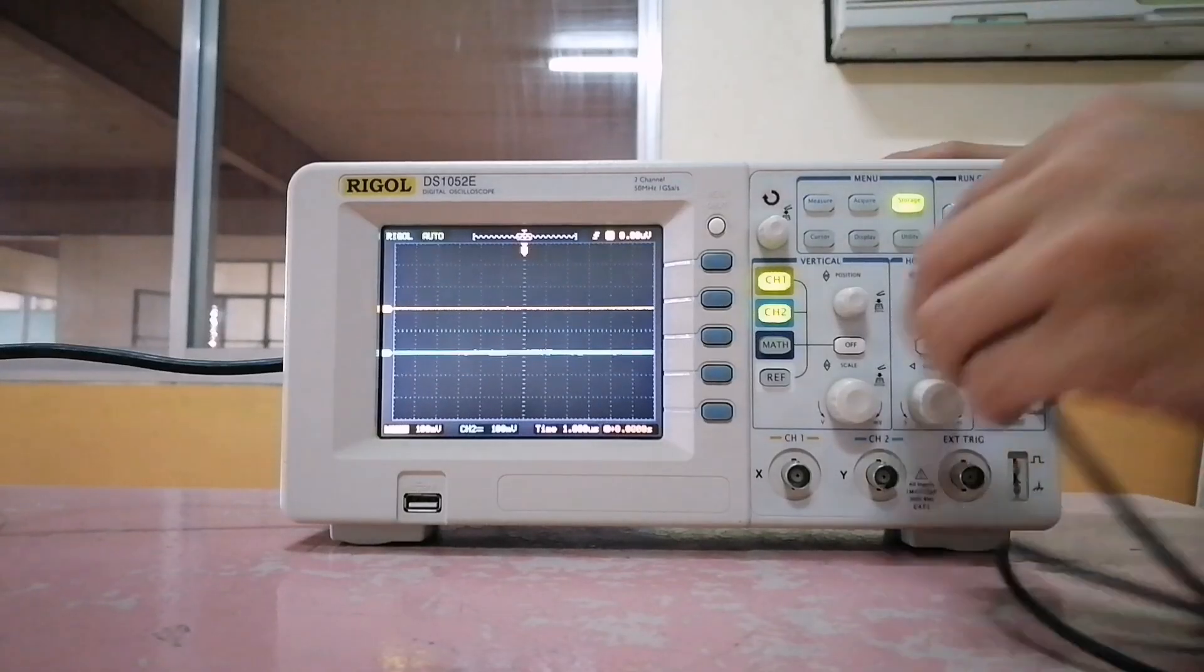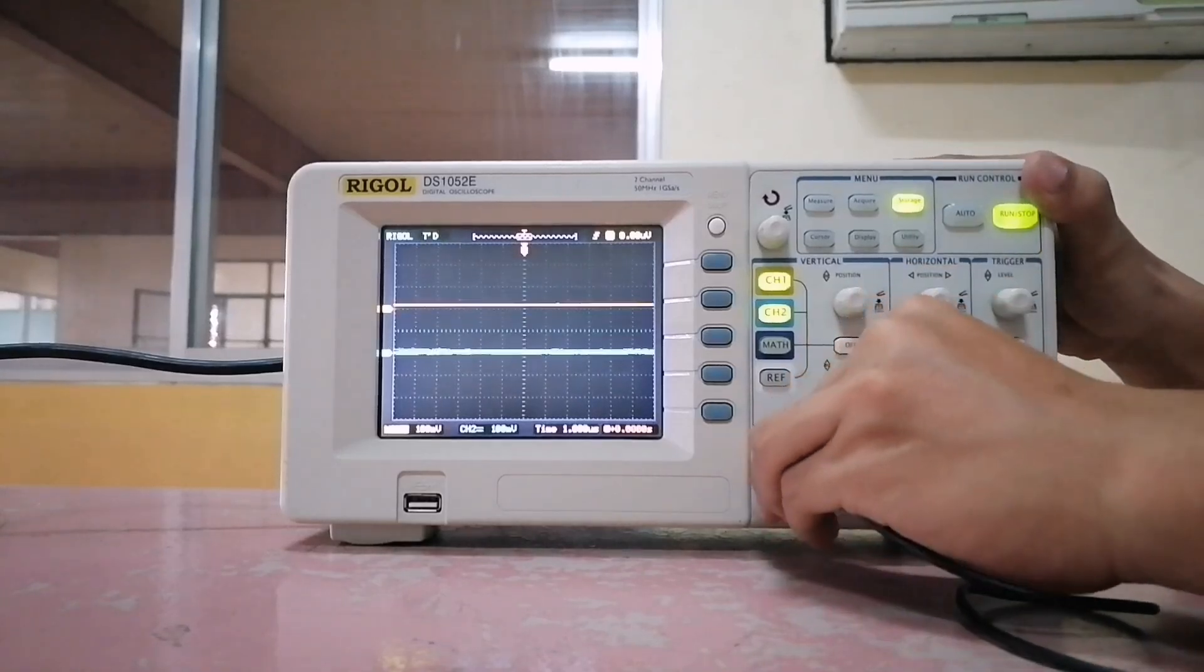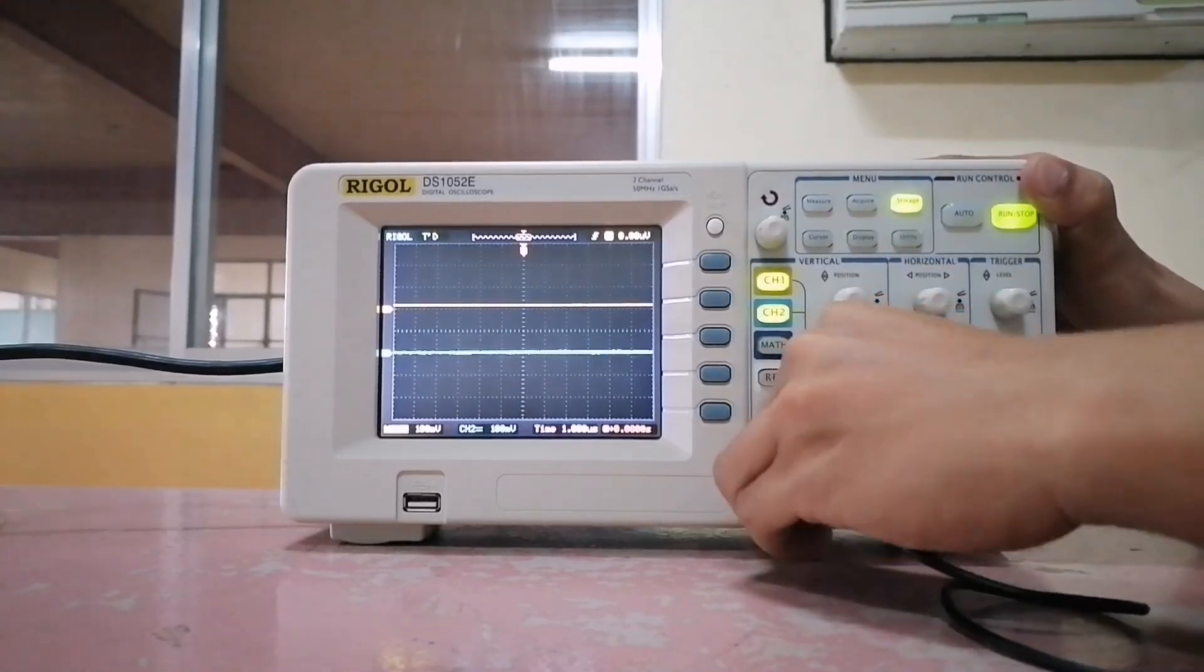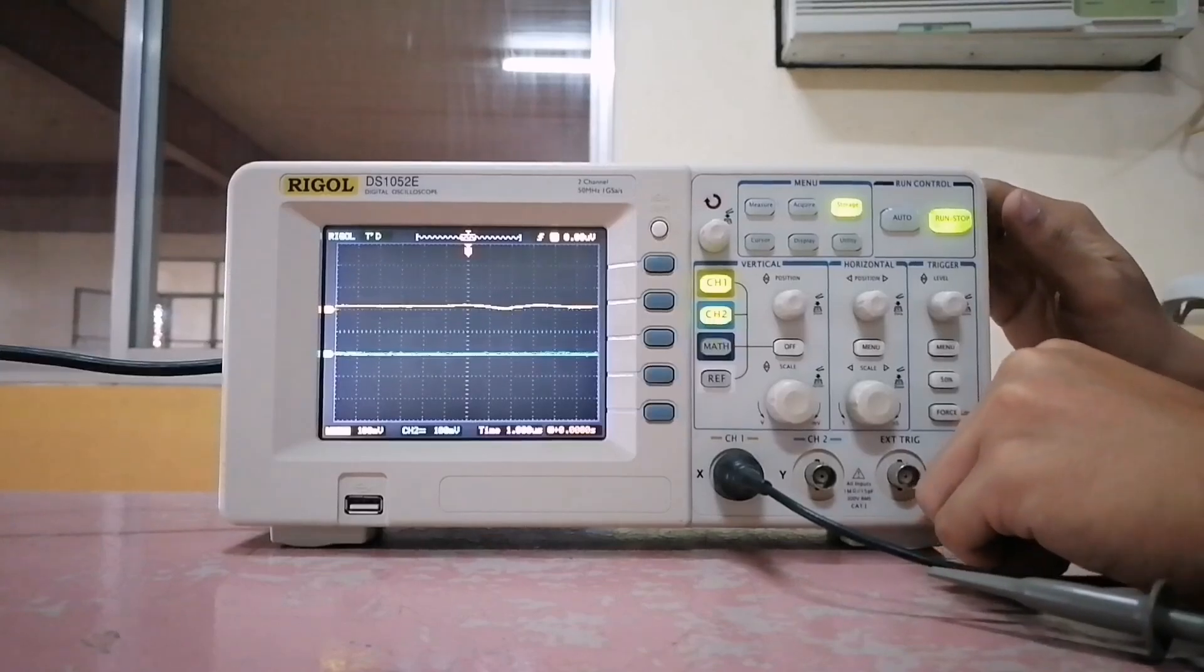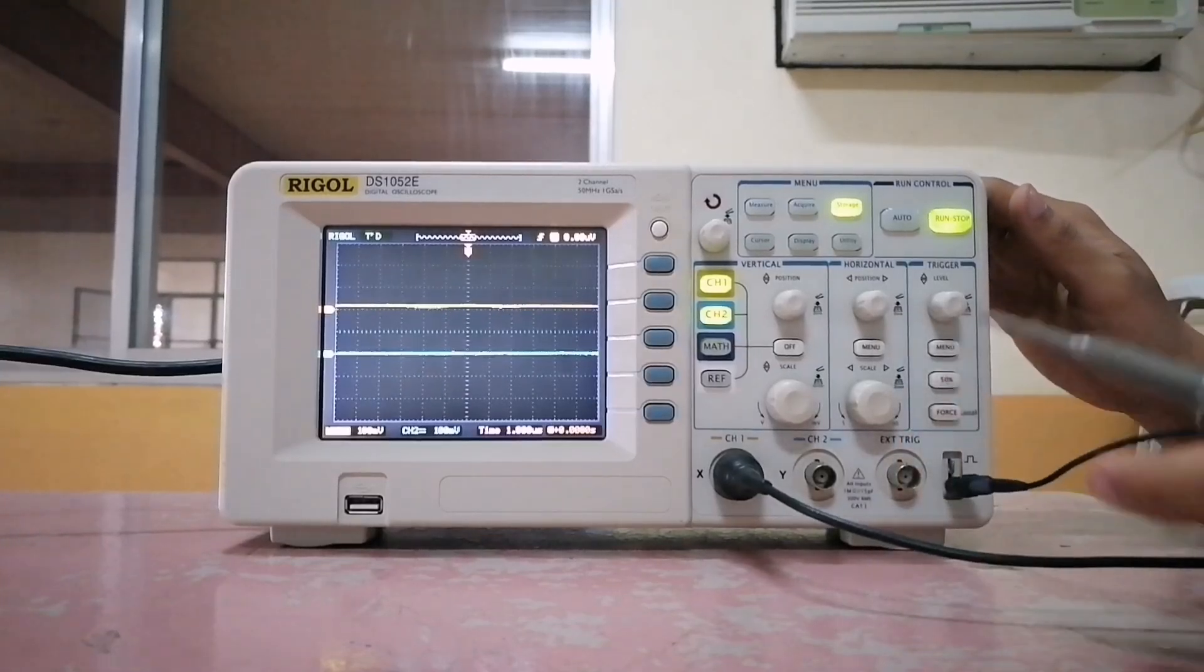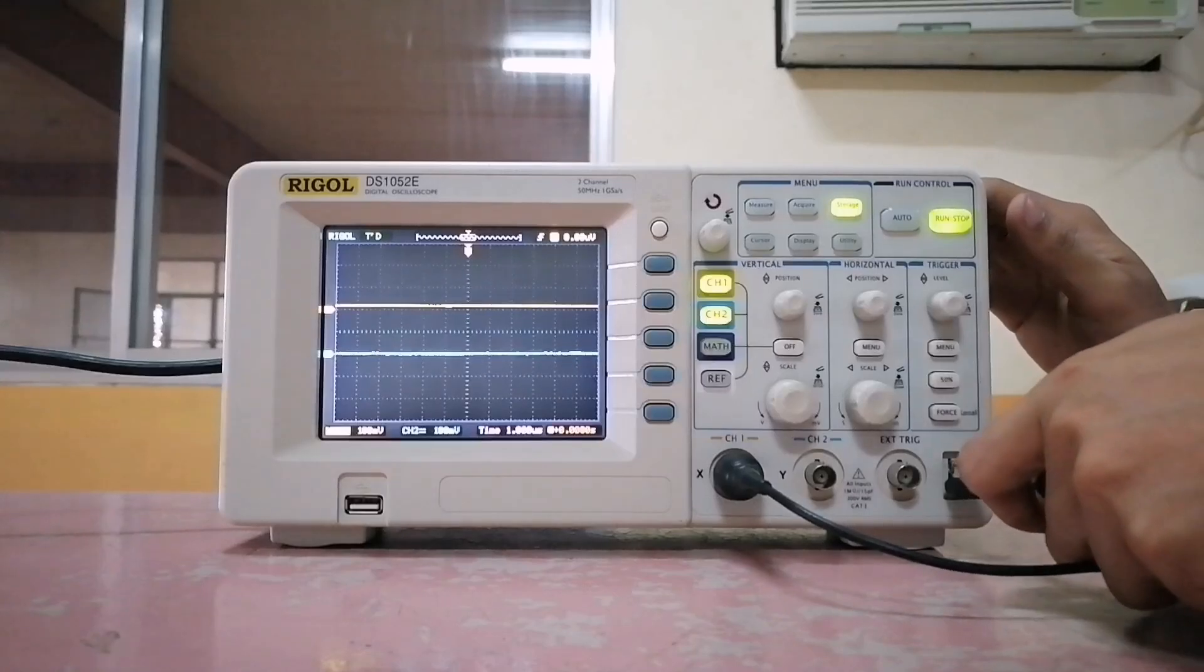Let's connect it now to channel 1. We're going to connect the probe to the built-in square wave. First, the ground lead is connected to the ground, and the input lead to the input square wave.